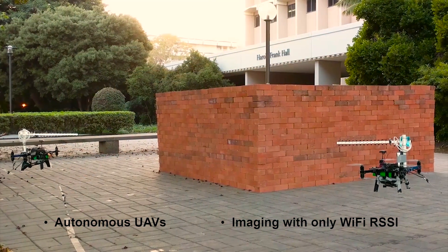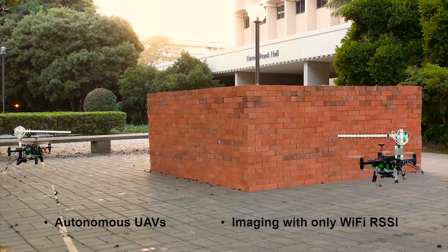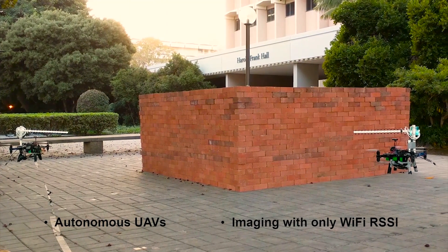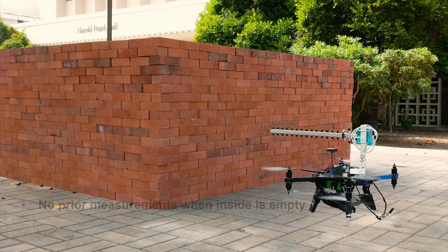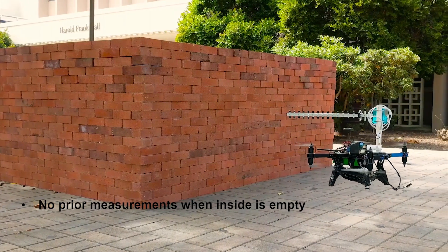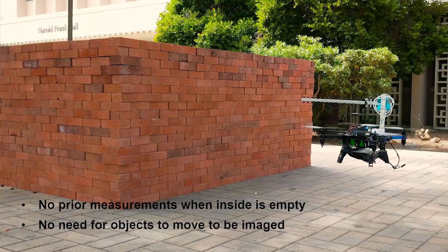They fly outside of the area of interest while one of them transmits a Wi-Fi signal and the other one measures the corresponding received power. No prior measurements have been made in this area and so the area is completely unknown to the robots.